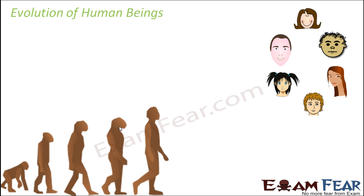When we talk about the evolution of human beings, do you think that all of them look similar? No, they are not. Some have straight hair, some have curly hair, some have brown, golden, or black hair. Some have fair skin, some have dark skin, some have small eyes, some have big eyes. Their features are so different, and people living in one part of the world look very different from those in another part.